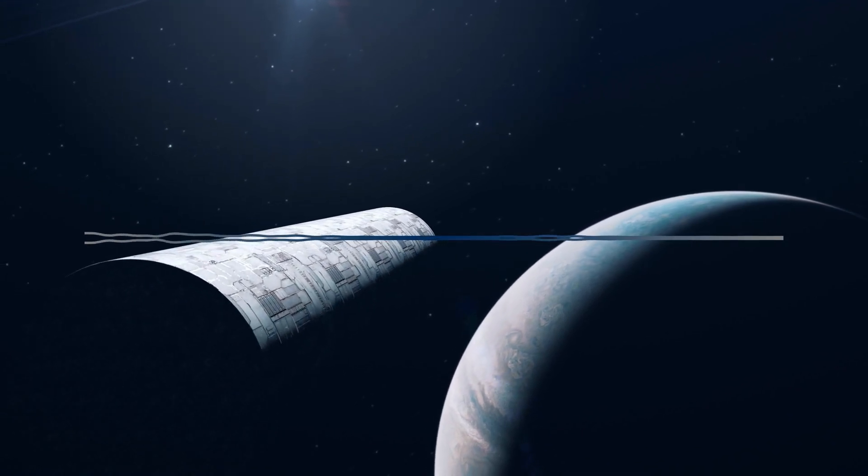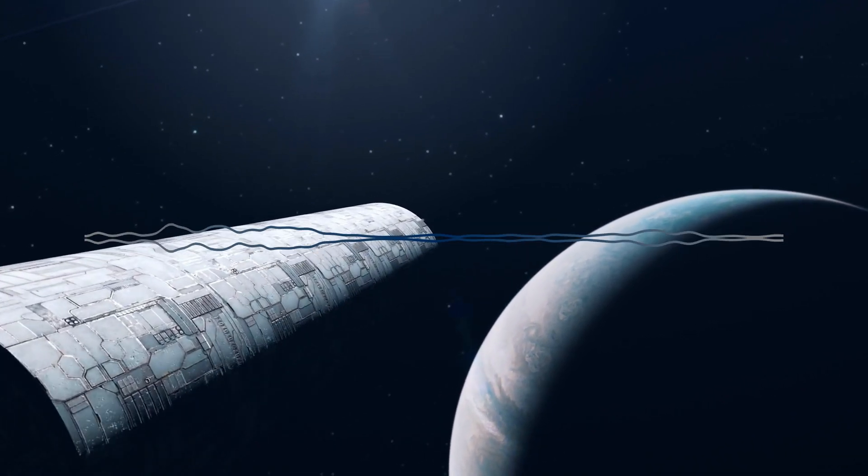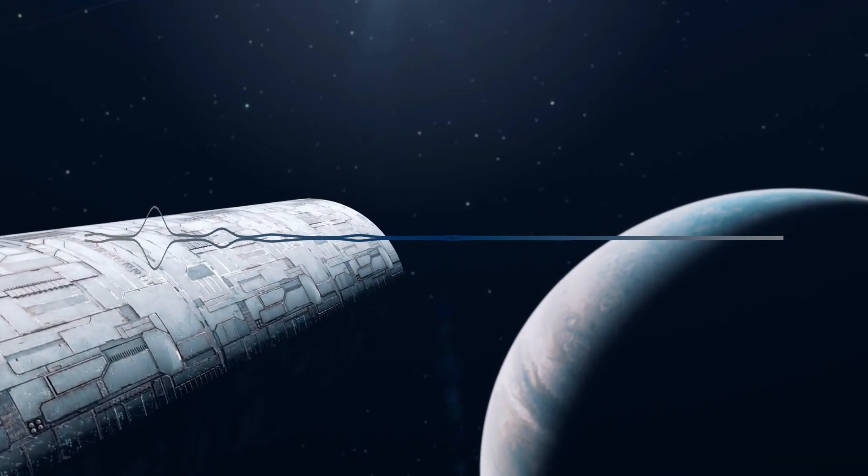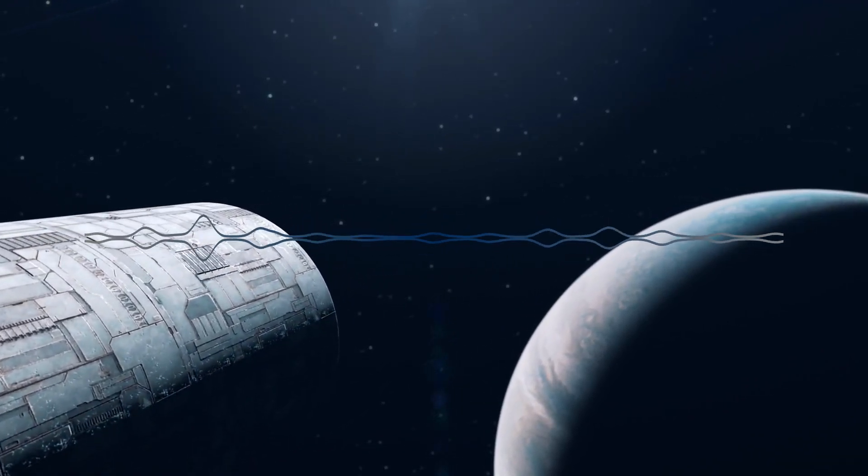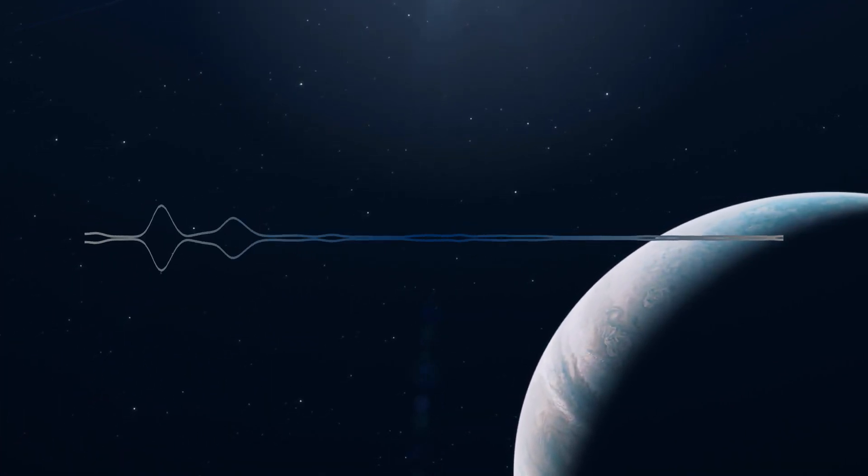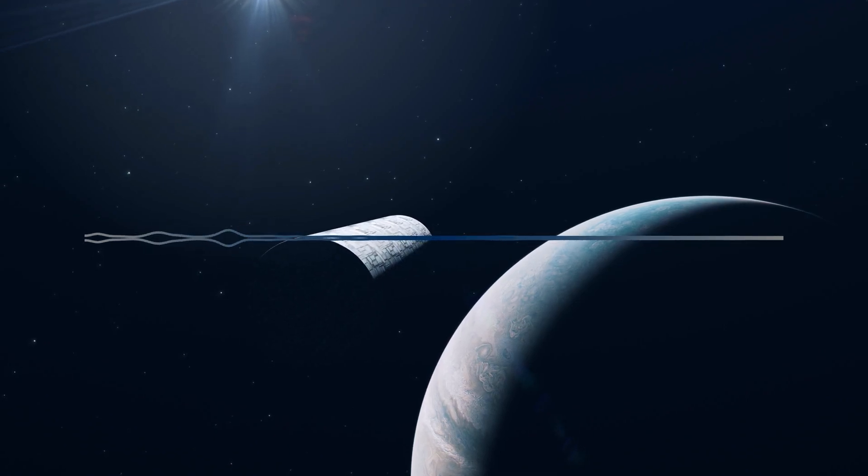Rapidly, we soon spread to the other planets in our home system. Then, out to more systems. One by one, more and more star systems fell under our control. Yet, not once did we find the monolith. It had vanished. Or so we thought.